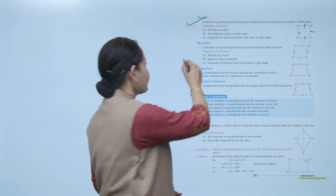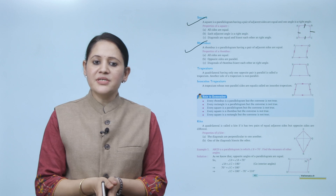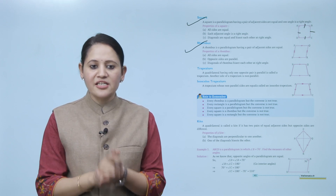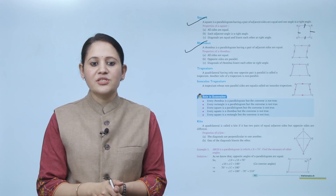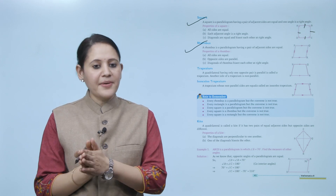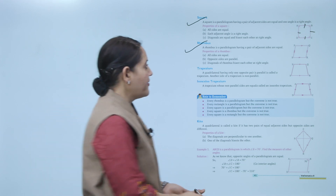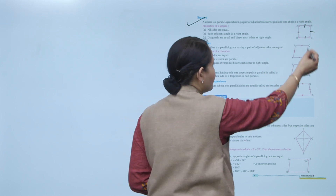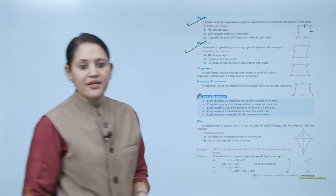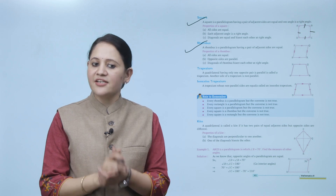Next is rhombus. A rhombus is a parallelogram having a pair of adjacent sides equal. Properties of rhombus: all sides are equal. Opposite sides are parallel — PS and QR are parallel, and PQ and SR are parallel. The diagonals of the rhombus bisect each other at right angles.